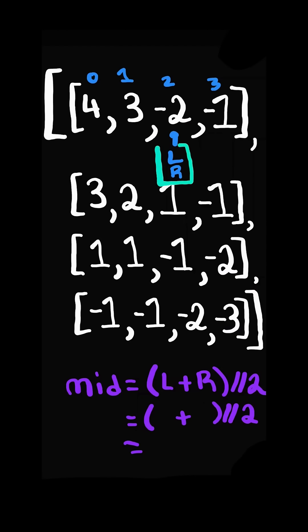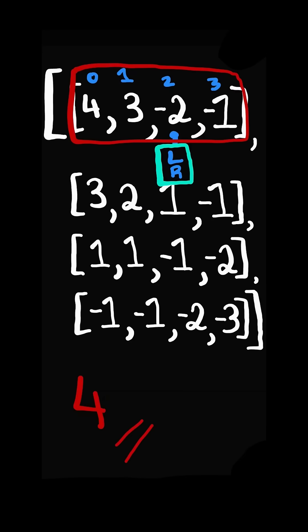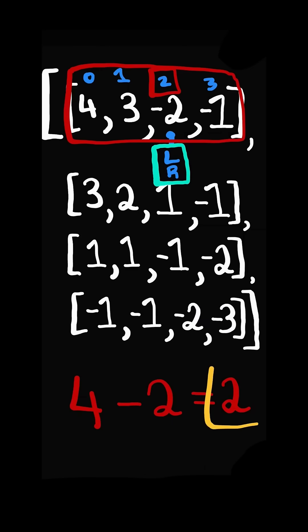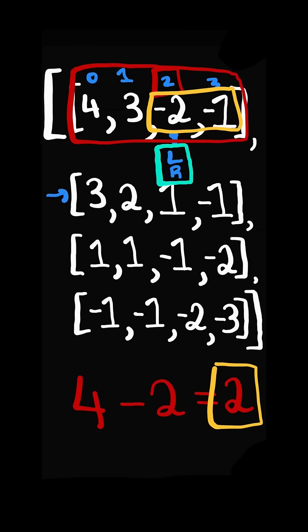When l and r meet each other or cross, we take the length of the row and subtract it by index l. And this gives us the amount of negative numbers in the row. And we continue the process for the next rows.